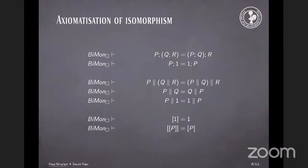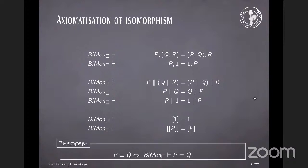We can also handle Pomsets with boxes axiomatically. So if we take these axioms, then we get the following theorem that two Pomsets are provably equivalent according to those axioms if and only if they are isomorphic.